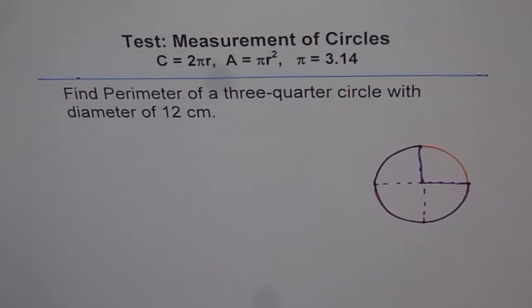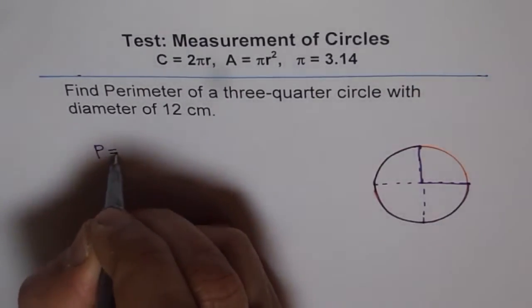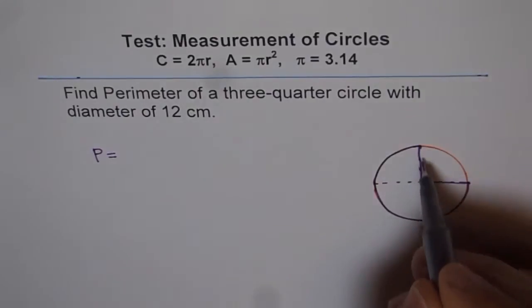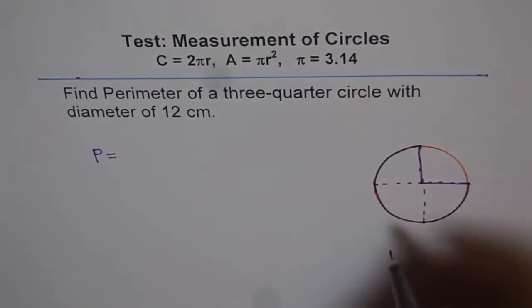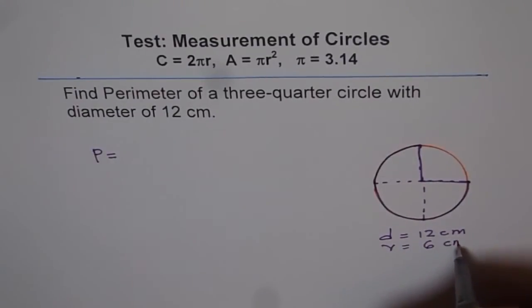Now the perimeter of this will be these two sides. Now what are the length of these two sides? Diameter is 12 cm. So we have diameter equals to 12 cm. Therefore the radius is half of diameter which will be 6 cm.